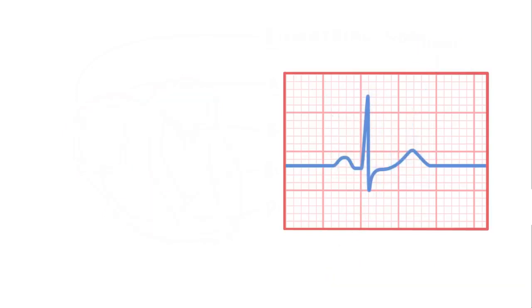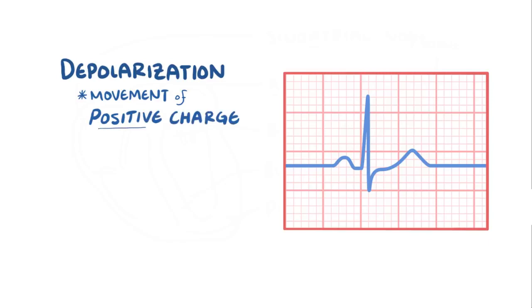The general principle to keep in mind is that the depolarization is caused by the movement of positive charge. So if that movement of positive charge is going toward the positive electrode, then it is captured as a positive deflection on an ECG. With that in mind, let's take a closer look at the mean or average QRS vector.